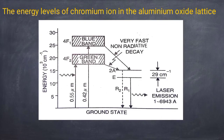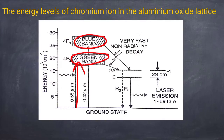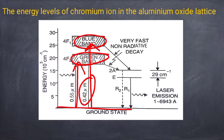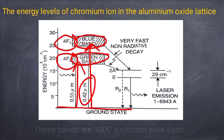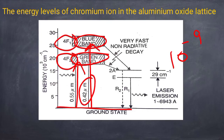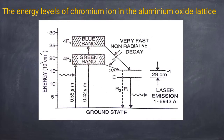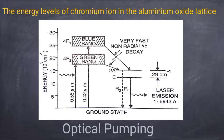The energy level diagram of the chromium ion in the aluminium oxide lattice shows two pump bands: the green band, centered at 0.55 micrometers from the ground state, and the blue band, centered at 0.42 micrometers. The blue band is known as the 4F1 band and the green band as the 4F2 band. These two bands are 1000 angstroms wide each, with a very small lifetime of the order of 10⁻⁹ seconds.